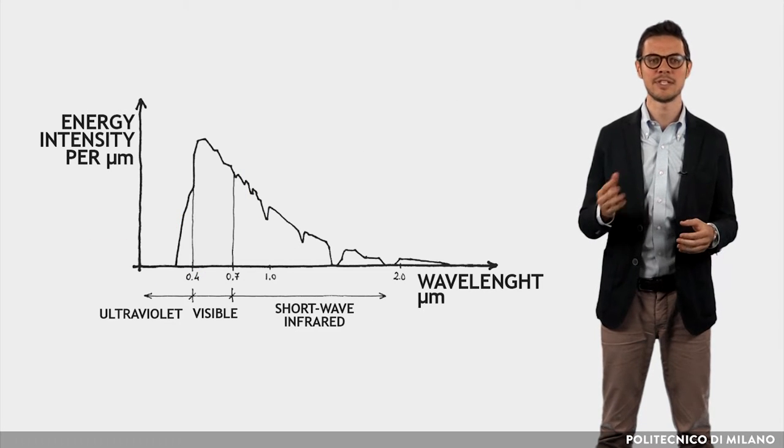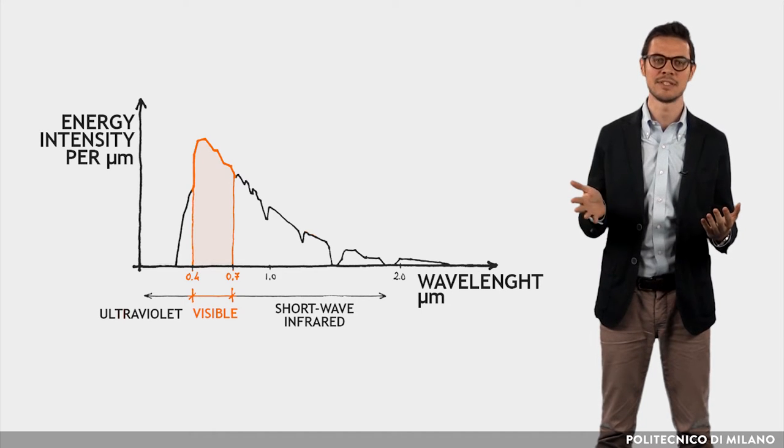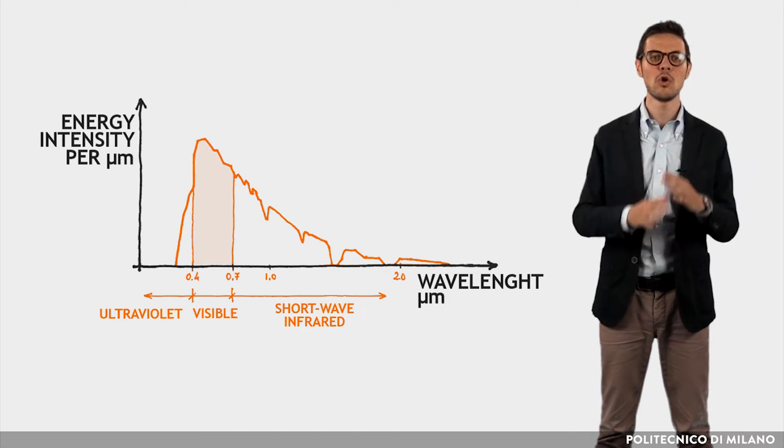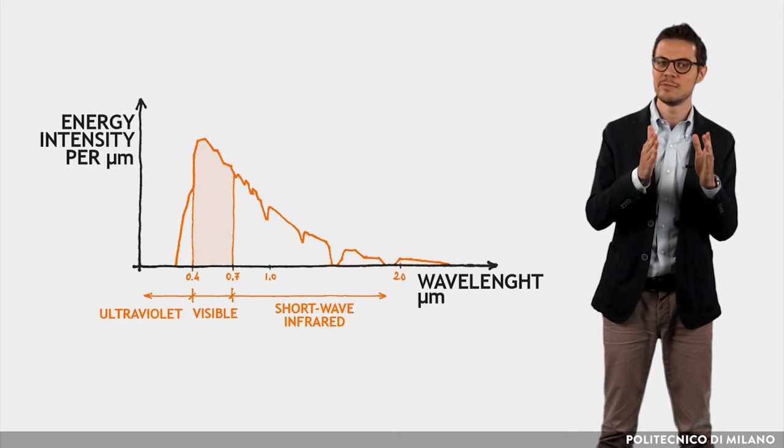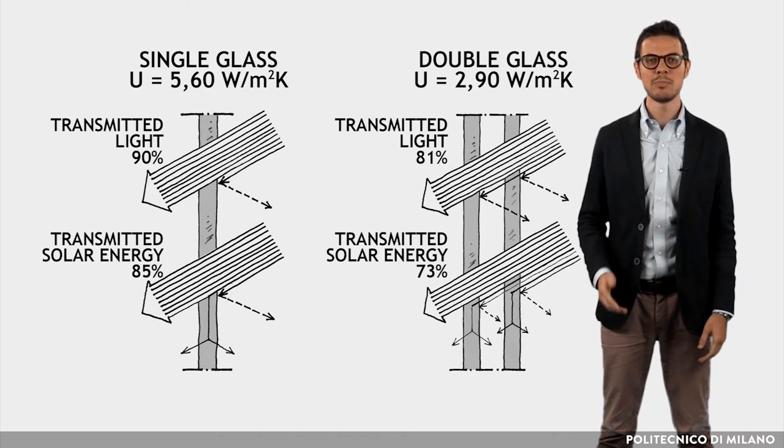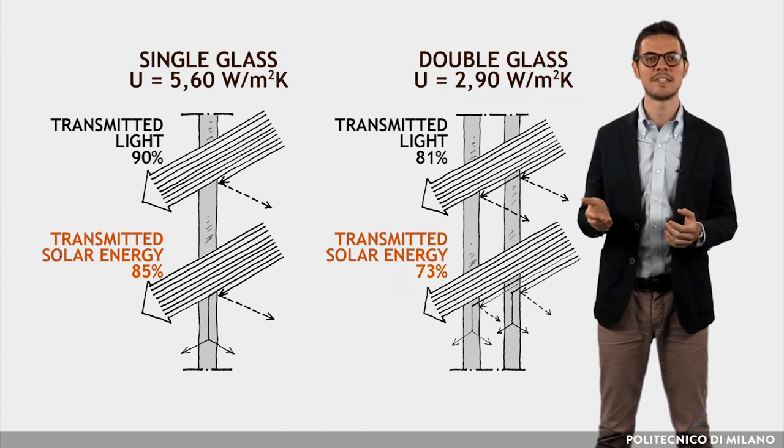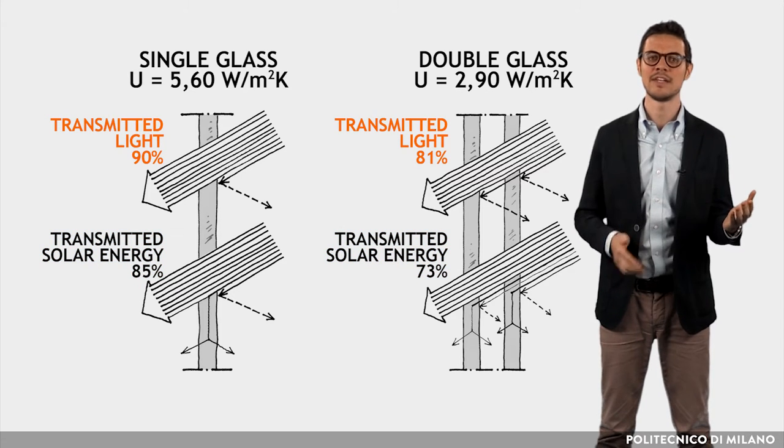However, the fraction of solar energy transmitted does not correspond to the fraction of light transmitted. This is due to the fact that glass transmits whole wavelengths of the solar spectrum, not only the ones contained in the visible spectrum. For example, in this image, according to the type of glass, we can see that the amount of transmitted solar energy is different from light transmitted.